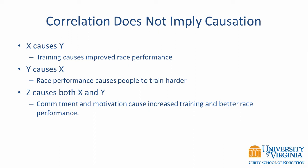It's important to keep in mind that correlation does not imply causation. When describing the coefficient of determination, I use the term 'explained by,' but do not interpret that to mean 'caused by.' There are three possibilities when there is a relationship between two variables: X could cause Y, Y could cause X, or a third variable could cause both X and Y. For example, commitment and motivation may cause both increased training and better race performance. When describing your results, avoid any suggestion of causation.